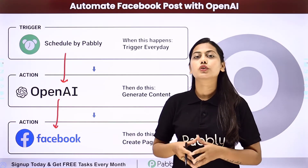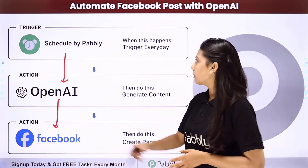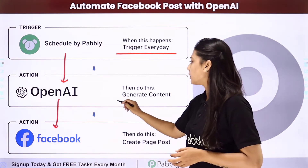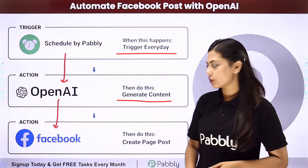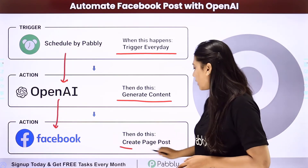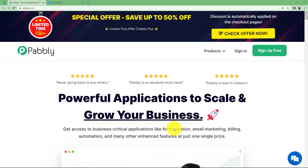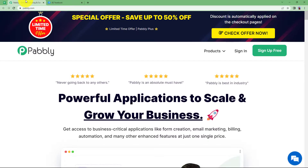This automation we are going to create with the help of Pabbly Connect. Our trigger will be a daily schedule, our first action will be to generate content using OpenAI, and our last action will be to create a page post in Facebook. In this video we will learn how to create a post on your Facebook page automatically and also generate the content using OpenAI.